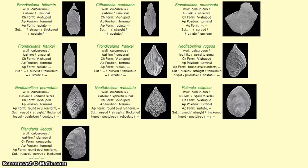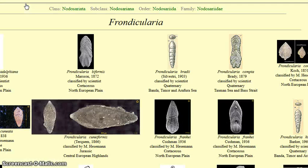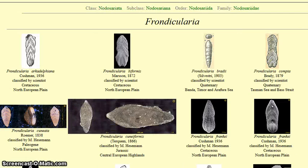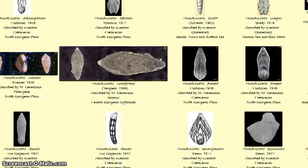So what are the options from this point? You may want to see an overview of a genus — for example, Frondicularia. You press on the genus link and you get an overview of different Frondicularias.